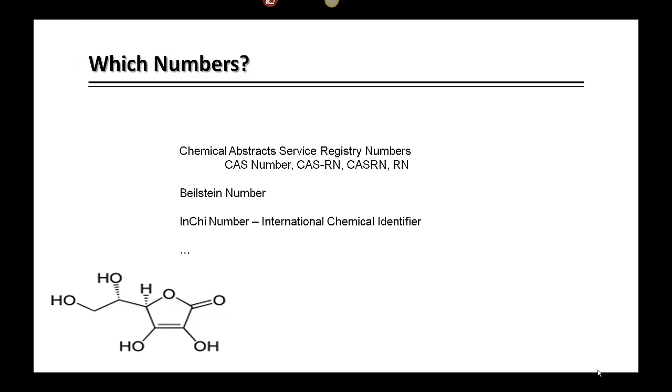The most commonly used numbering system is the Chemical Abstract Service Registry Number, which you will see abbreviated as CAS Number, CAS RN, or just RN.